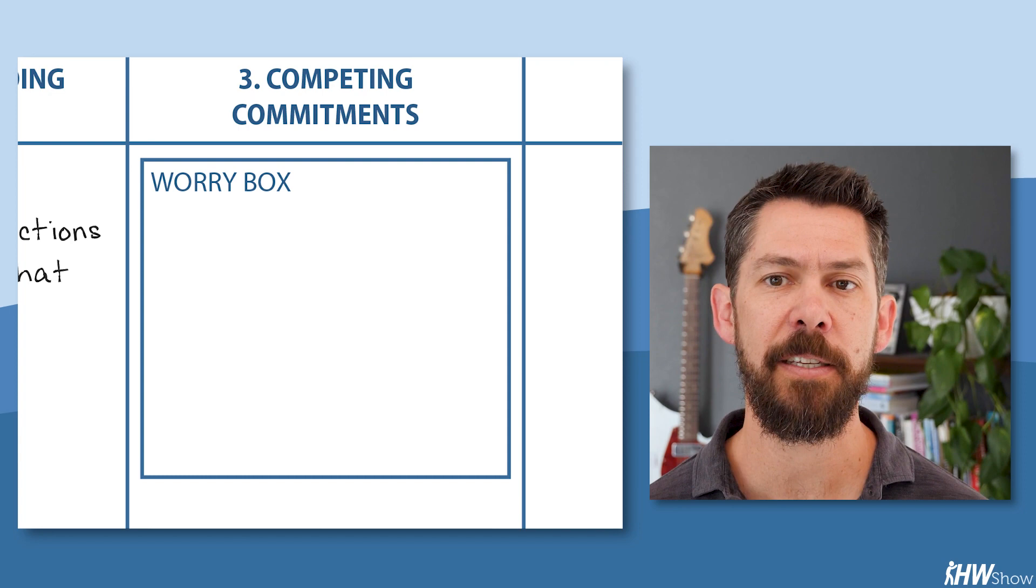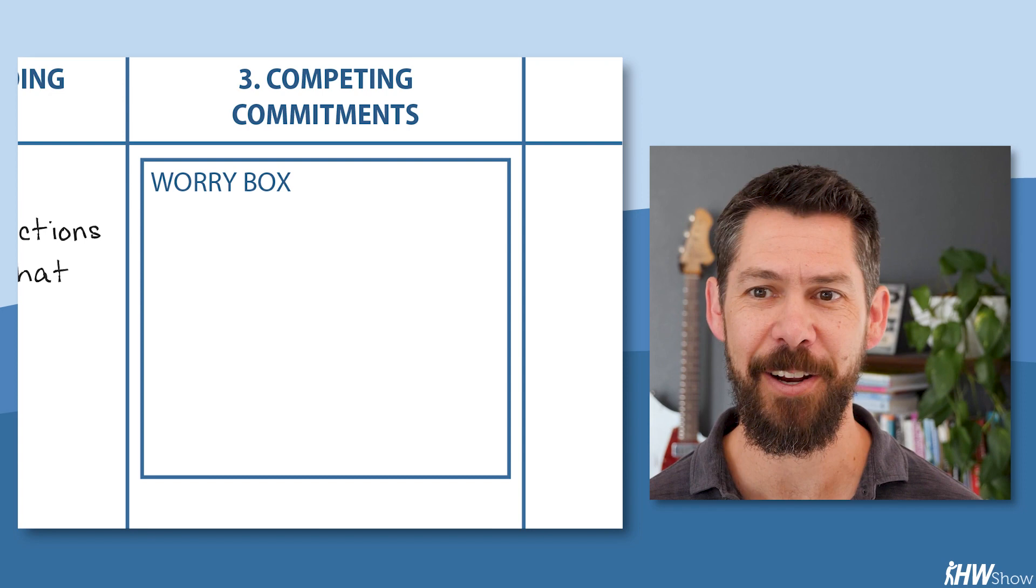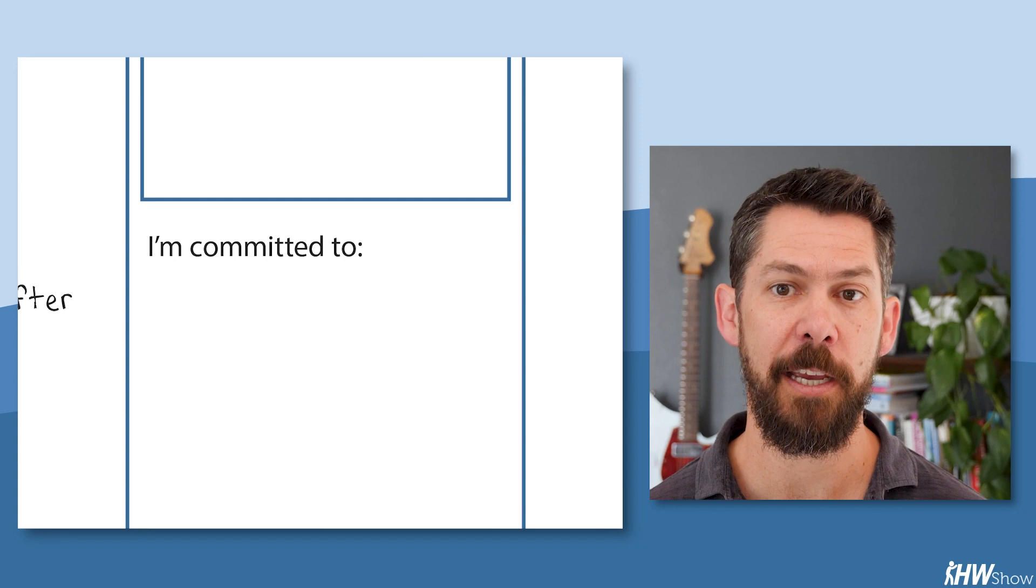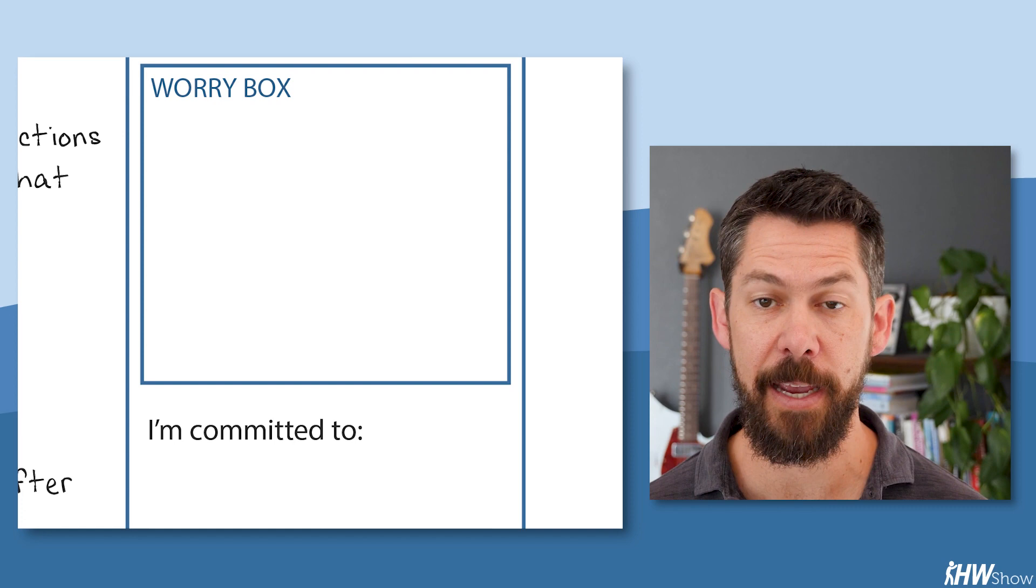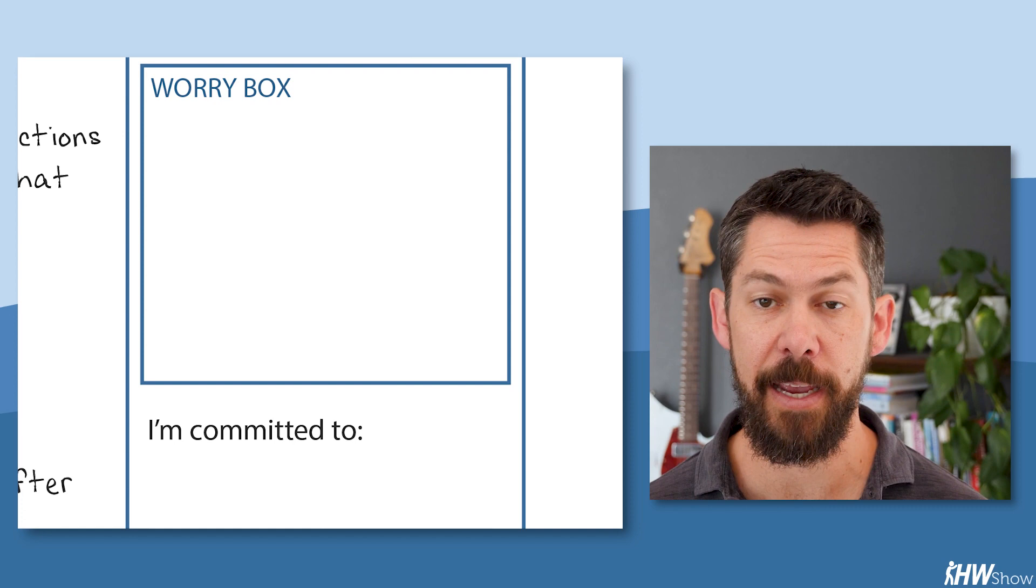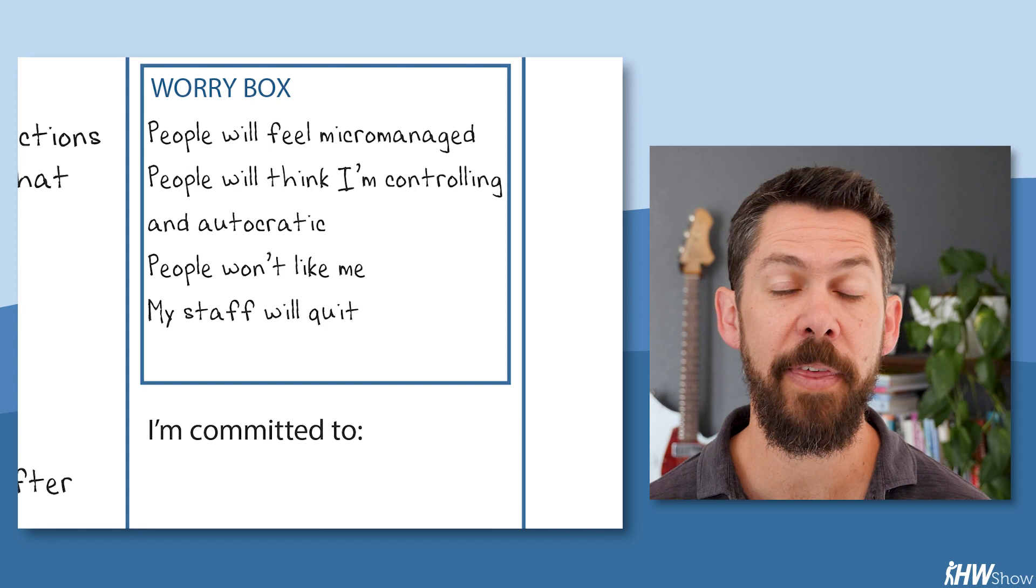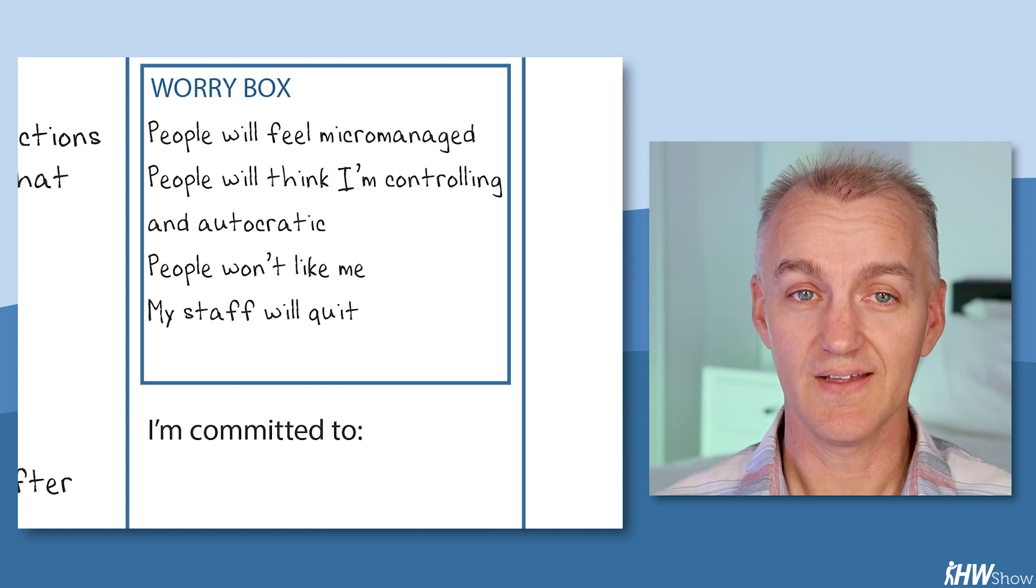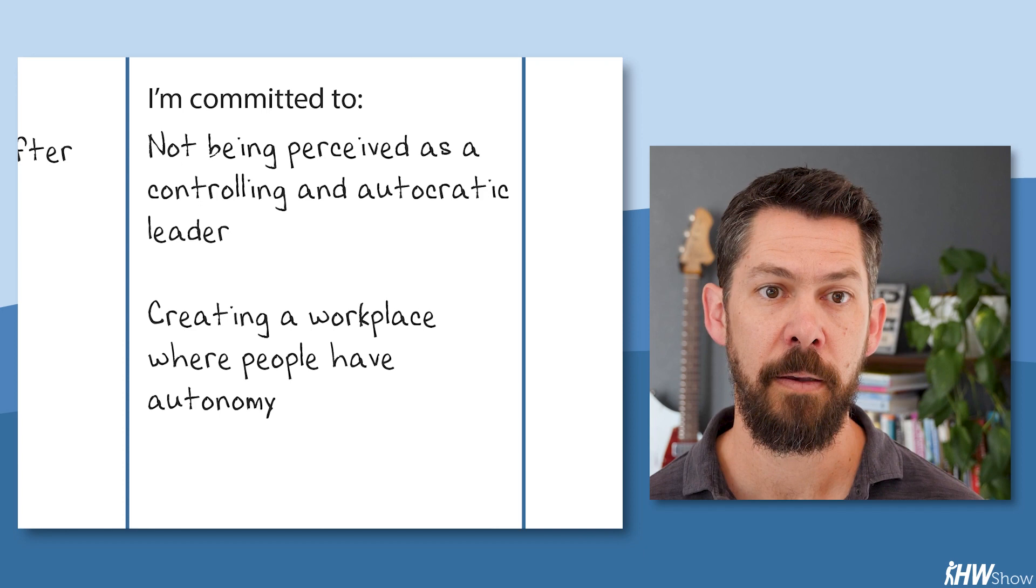Column three has two parts. The top half is what's called the worry box. It's where you capture the negative outcomes you worry will happen if you really do the thing you say you're committed to doing from column one. And then the bottom half is the hidden competing commitment you infer from those worries. In this situation, the worry box had things like, if I give clear directions, I worry that people will feel micromanaged. People will think I'm controlling and autocratic. People won't like me. My staff will quit. As we explored the energy around those different worries, the hidden competing commitment this revealed was something like, I'm committed to not being perceived as a controlling and autocratic leader.